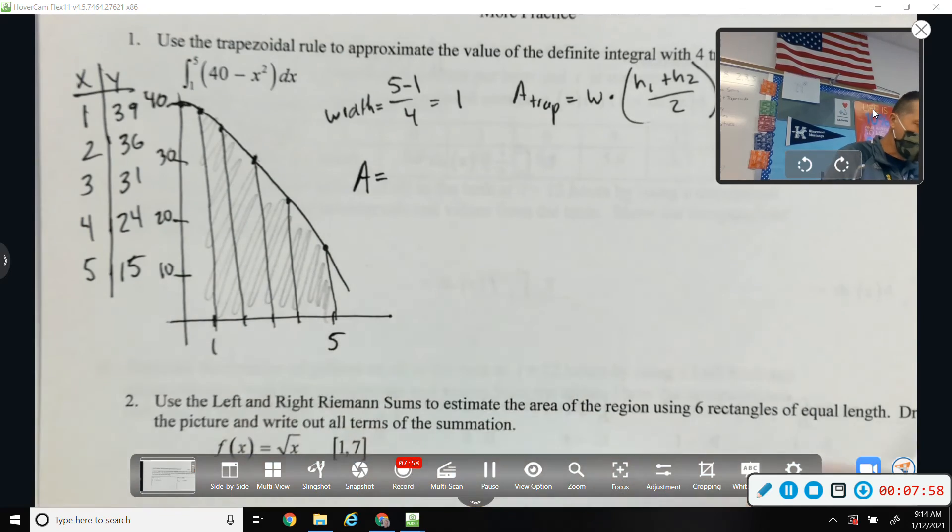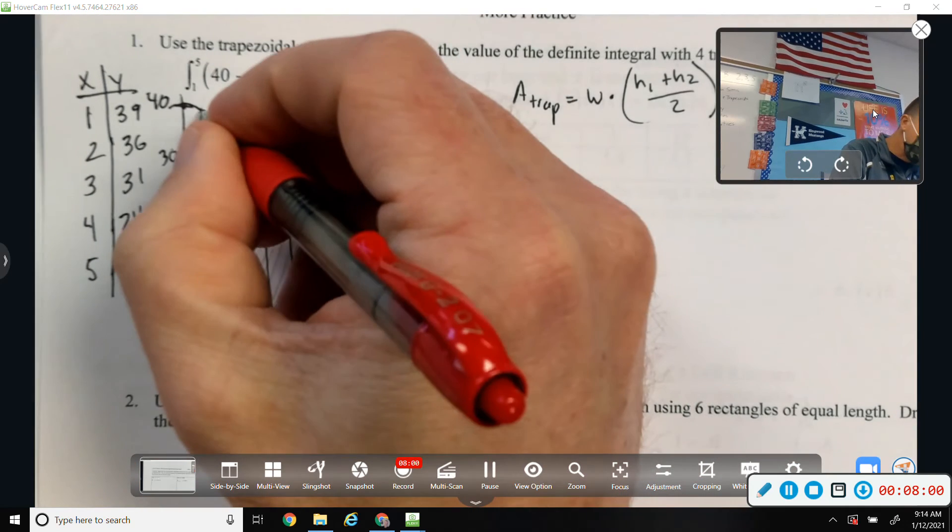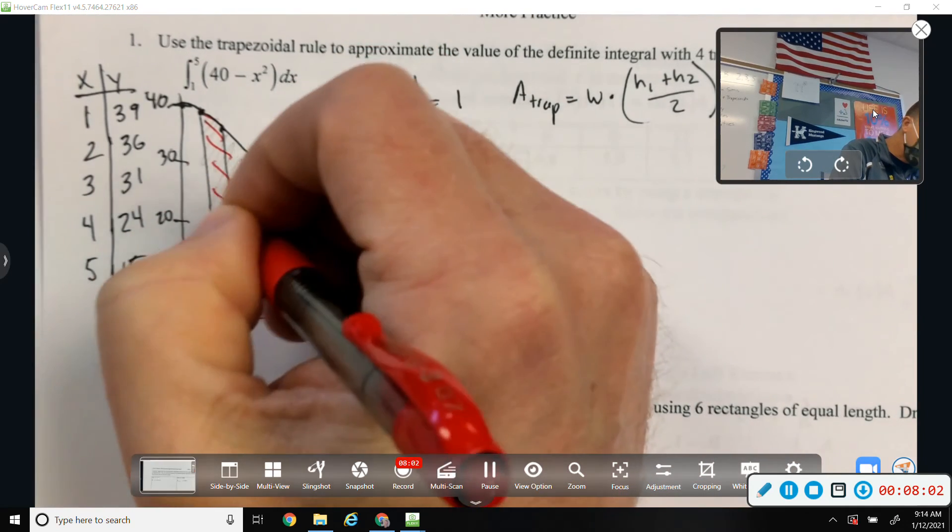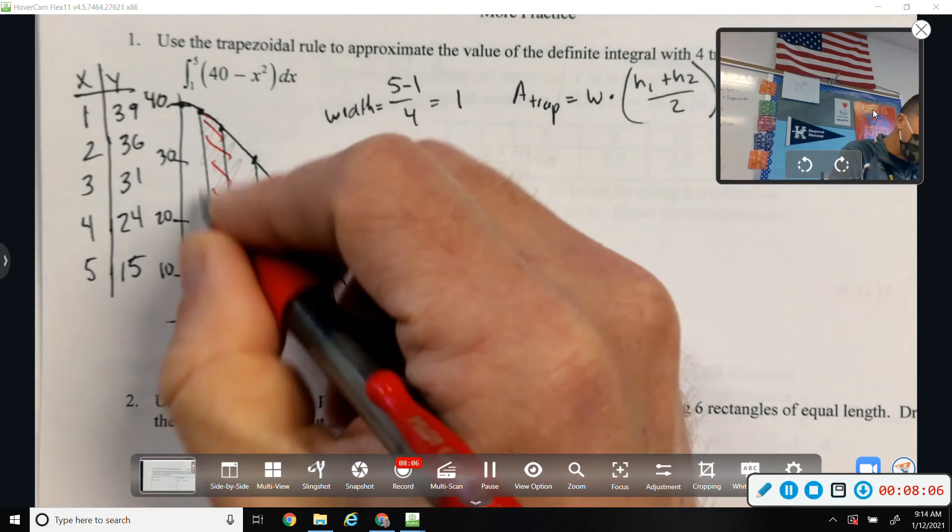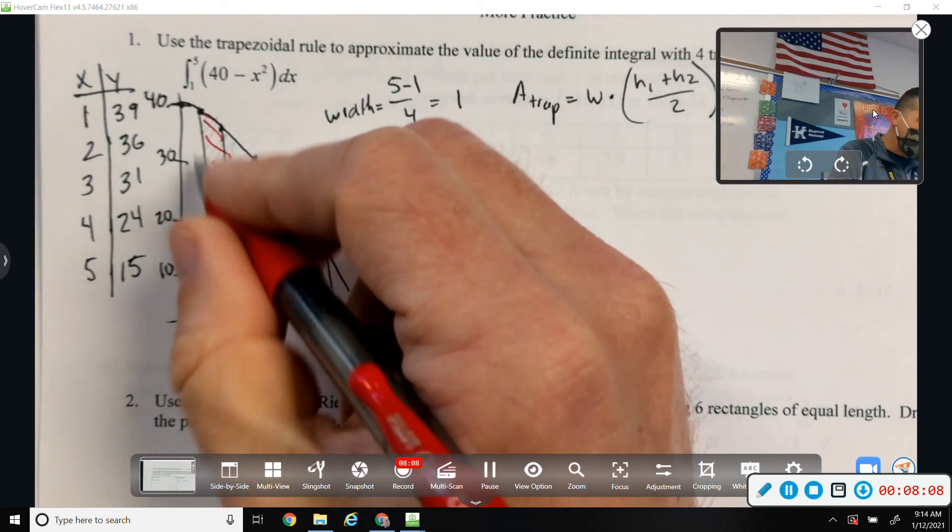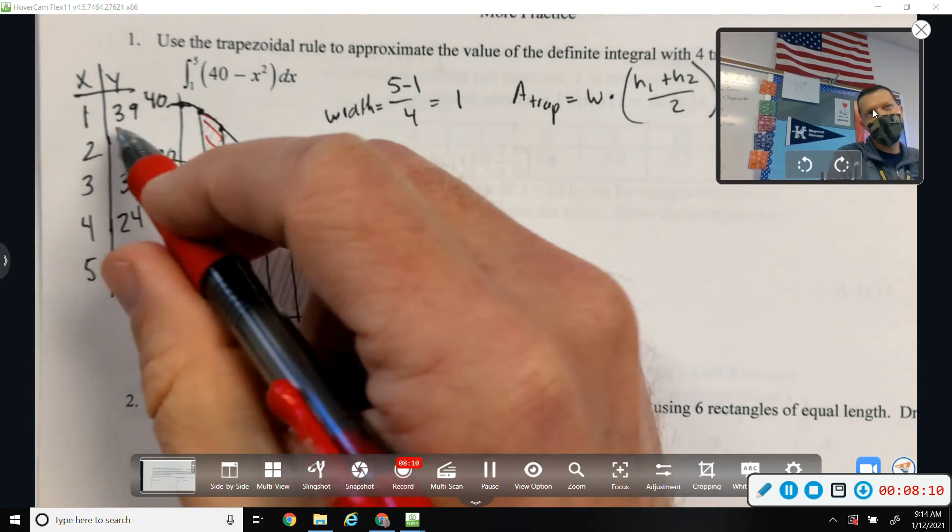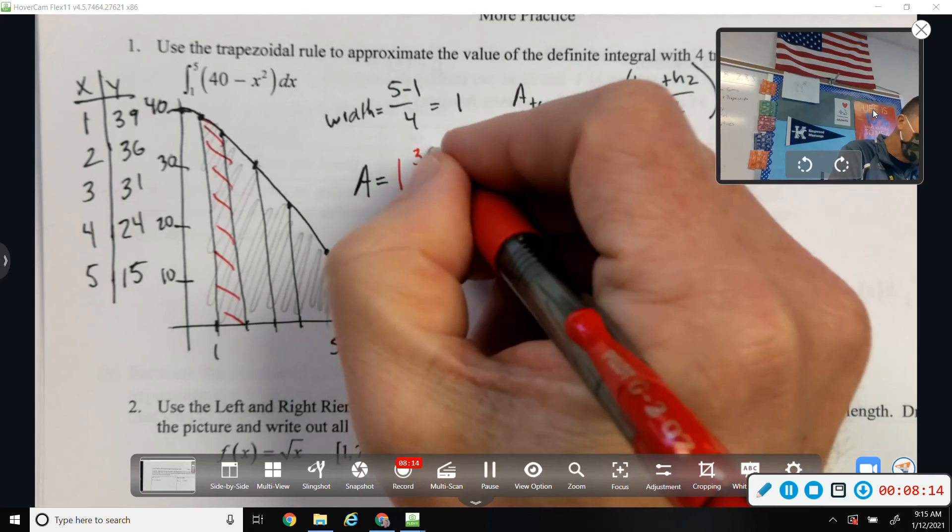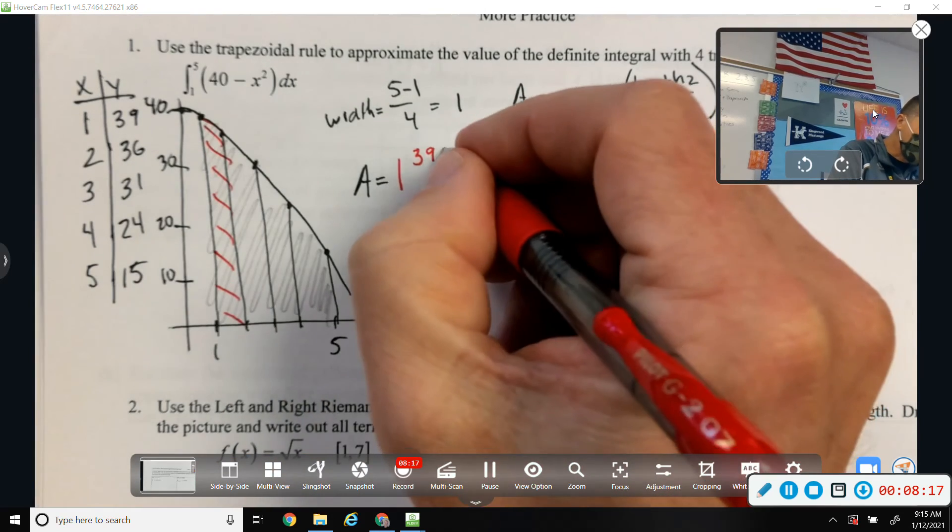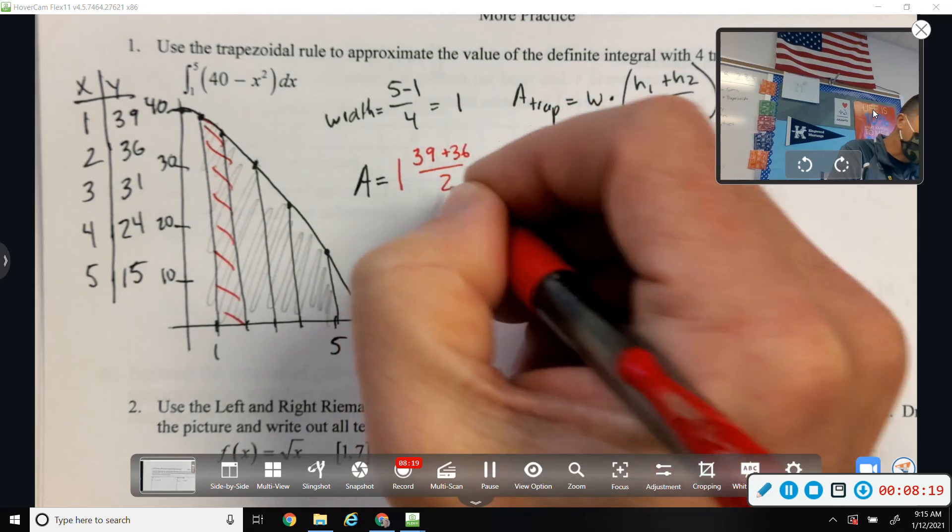So, for the first trapezoid, the width is 1. H1 is f of 1, or I could just go ahead and plug in 39, because I've already got it right here. Plus f of 2, which is 36 over 2, so the average height.